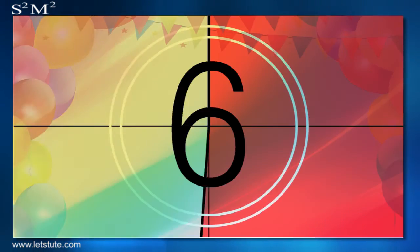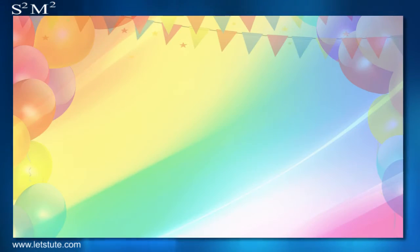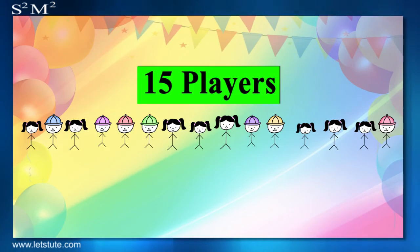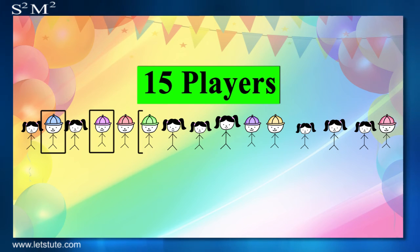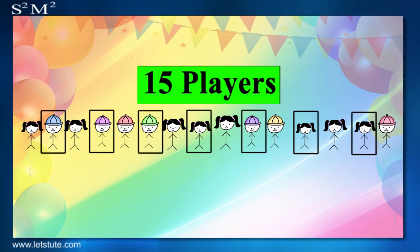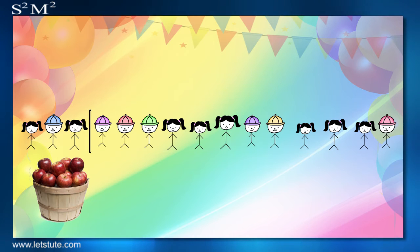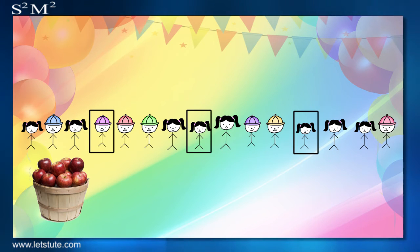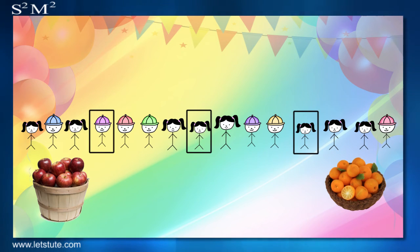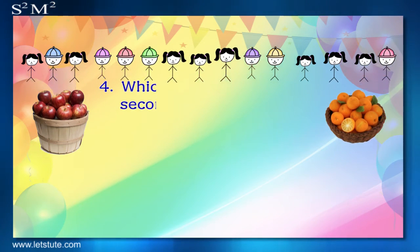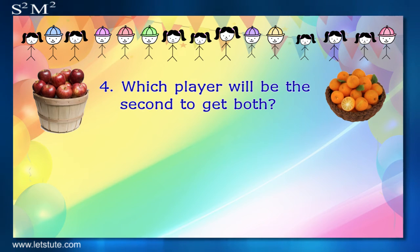Now, in the next hour of the party, they are playing a game with a 15-player team, where every second player is getting an apple and every fourth player is getting an orange. So, which player will be the second to get both?